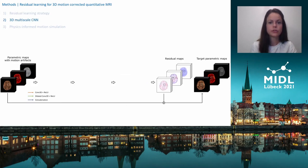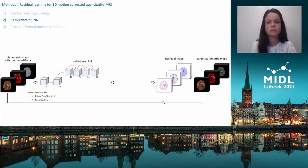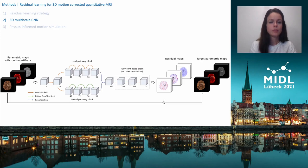In terms of model architecture, we propose a 3D patch-based multi-scale CNN to account for spatial relationships of the artifacts in all three dimensions and on multiple scales. The CNN is built with a local path that processes more localized, spatially adjacent features, while dilated convolutional layers in the global path gather more global contextual information with an increased receptive field. Both the local and global features are then concatenated and fed into a final block of fully connected layers.